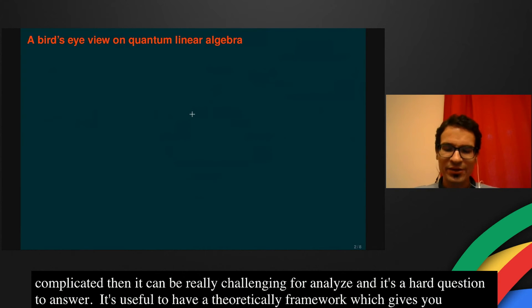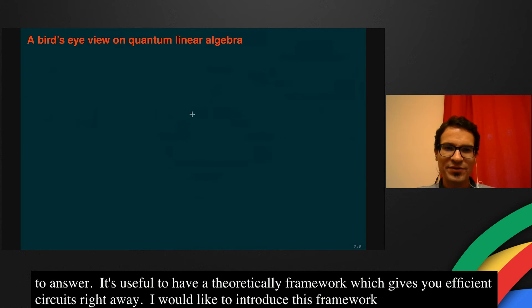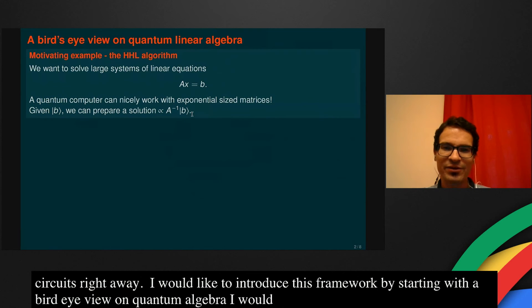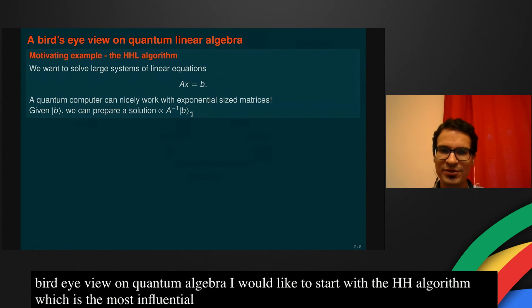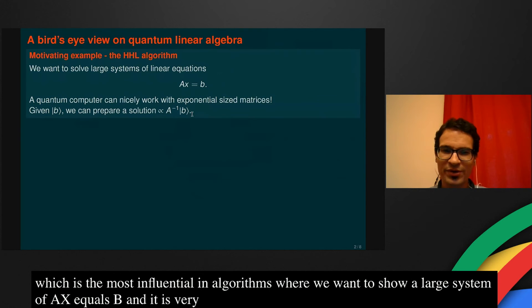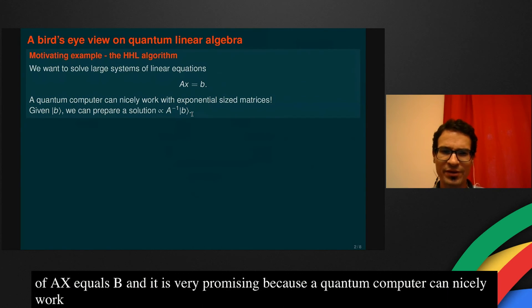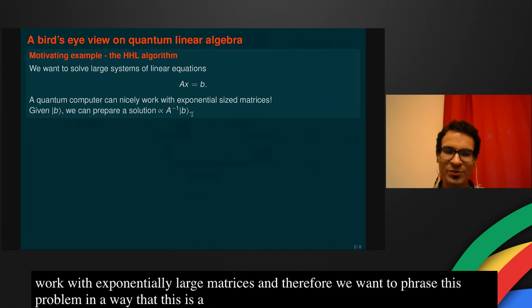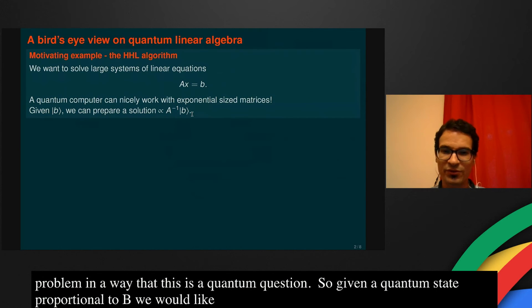I would like to introduce this framework by starting with a bird's eye view on quantum linear algebra. I would like to start with the motivation of HHL algorithm, which is one of the most influential quantum linear algebra algorithms, where we want to solve a large system of linear equations Ax = b. It is very promising because a quantum computer can nicely work with exponentially large matrices. Therefore, we want to phrase this problem in a way that this is a quantum question. So given a quantum state proportional to b, we would like to prepare a quantum state which is proportional to the solution A inverse b.